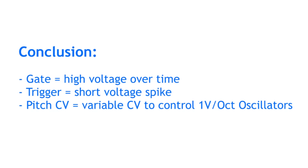To conclude: gate signals are high for a certain length, trigger signals just spike quickly, and pitch CV signals control oscillator frequencies, usually with 1 volt per octave. In the end, all signals are the same kind of electricity, even audio signals. So for example, you can use audio signals to affect pitch, or use quick gate signals as audio. You should just know these terms and what they mean in order to operate a modular synth on a basic level.